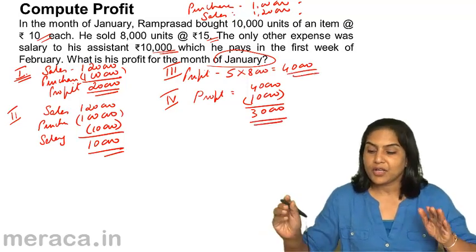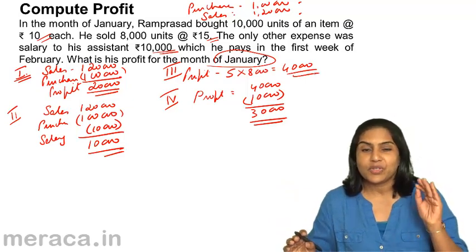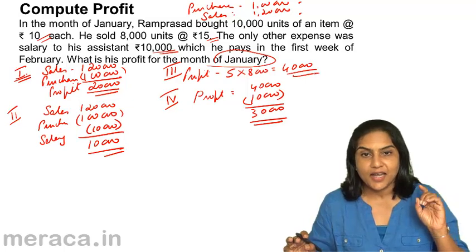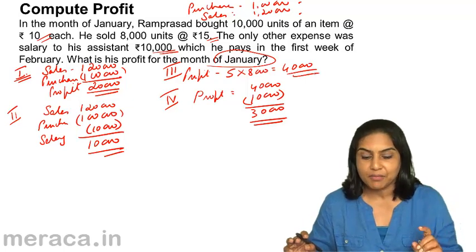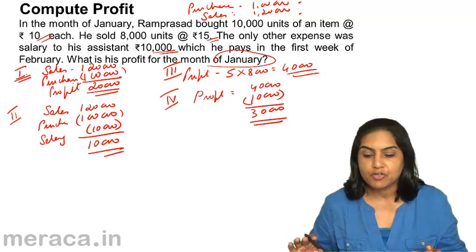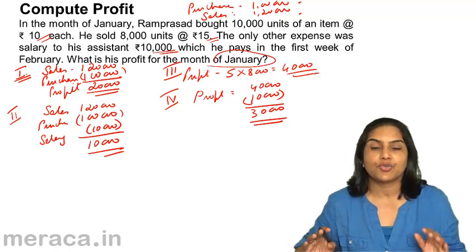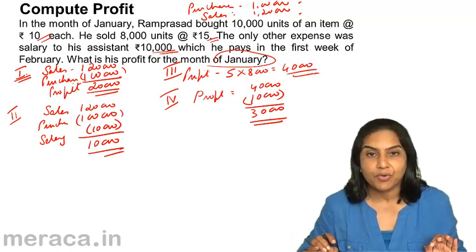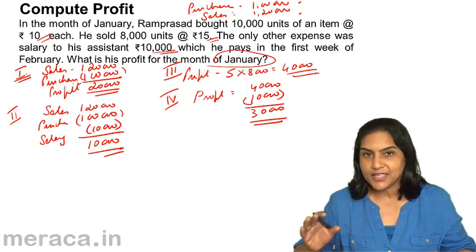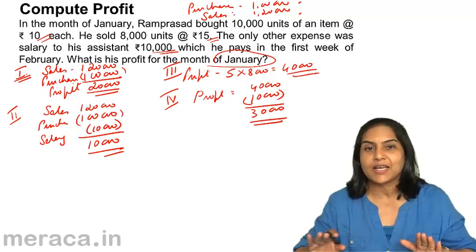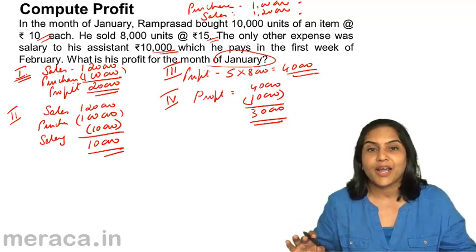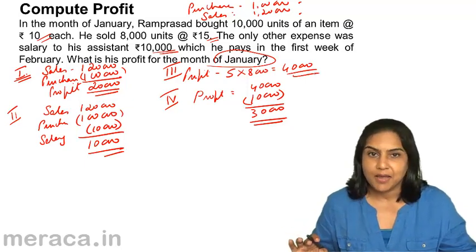So from one set of information — just three transactions: a purchase, a sale, and an expense — we have arrived at four different profits. Unless you and I understand accounting in the same manner, unless we understand some basic accounting concepts, it may be difficult to arrive at the same profit figure.